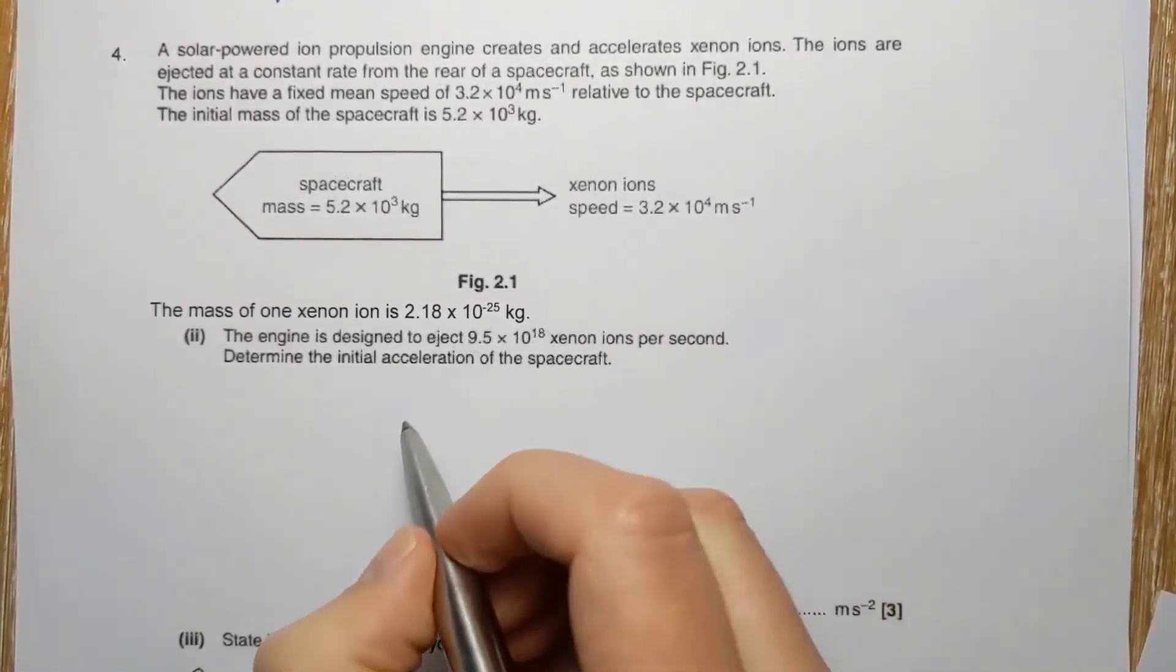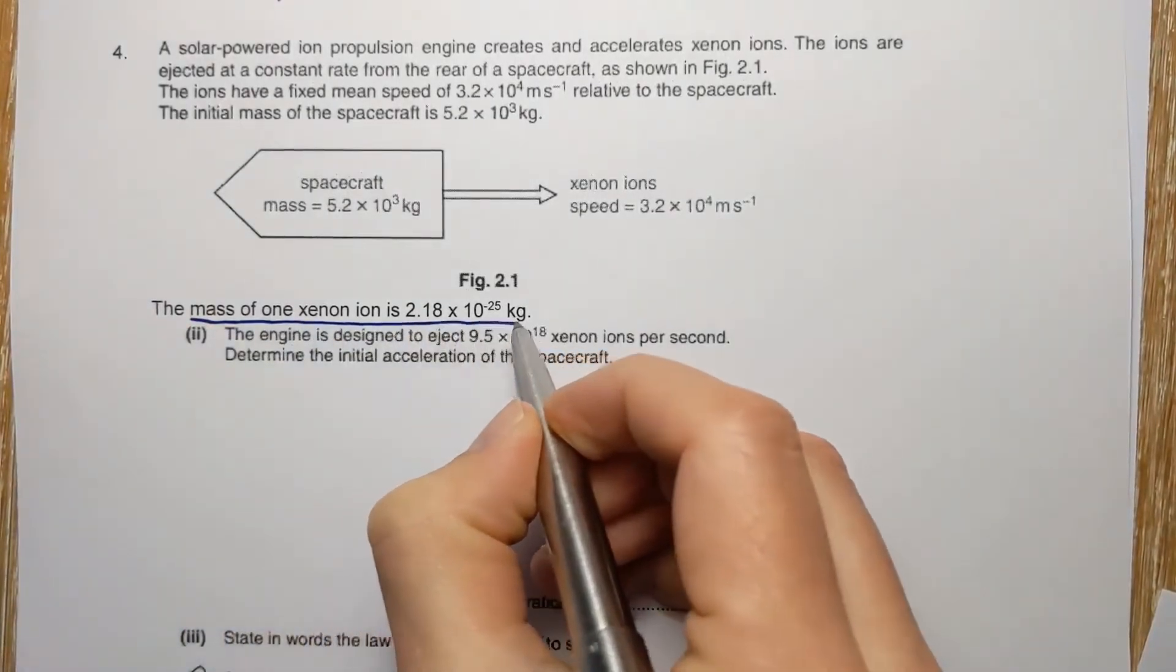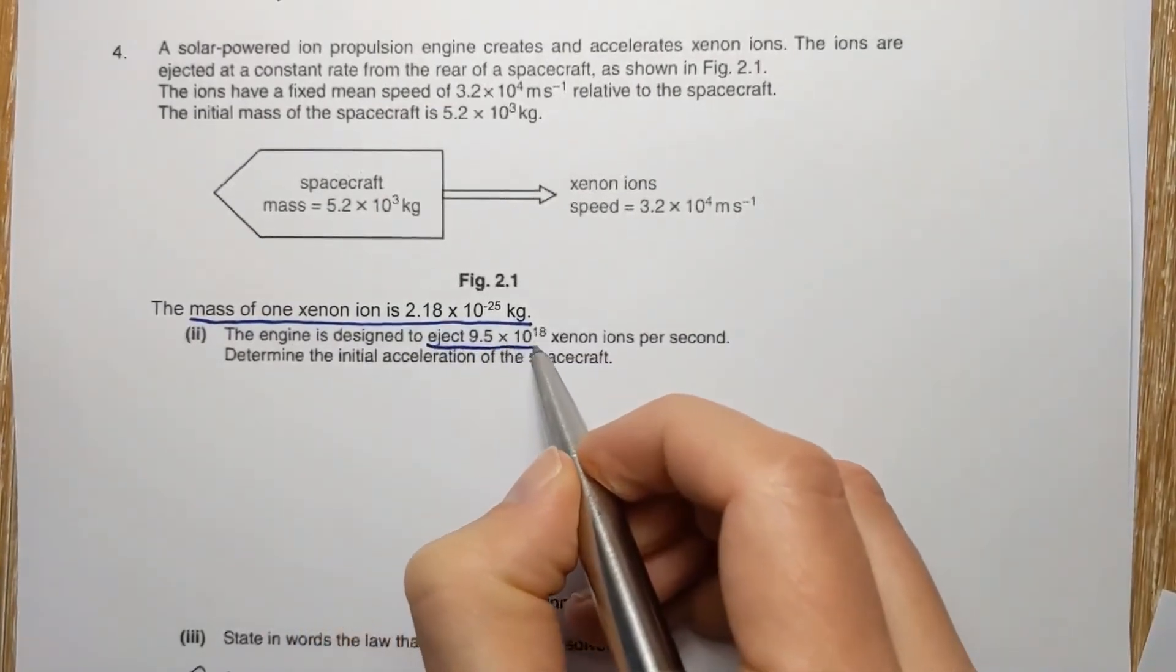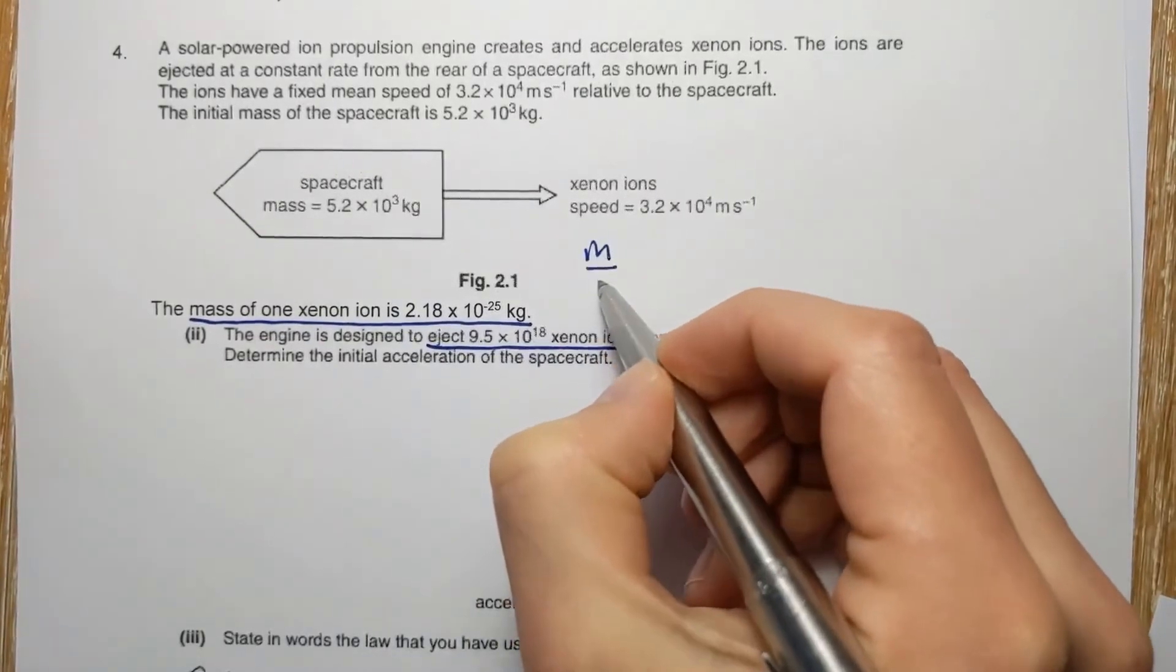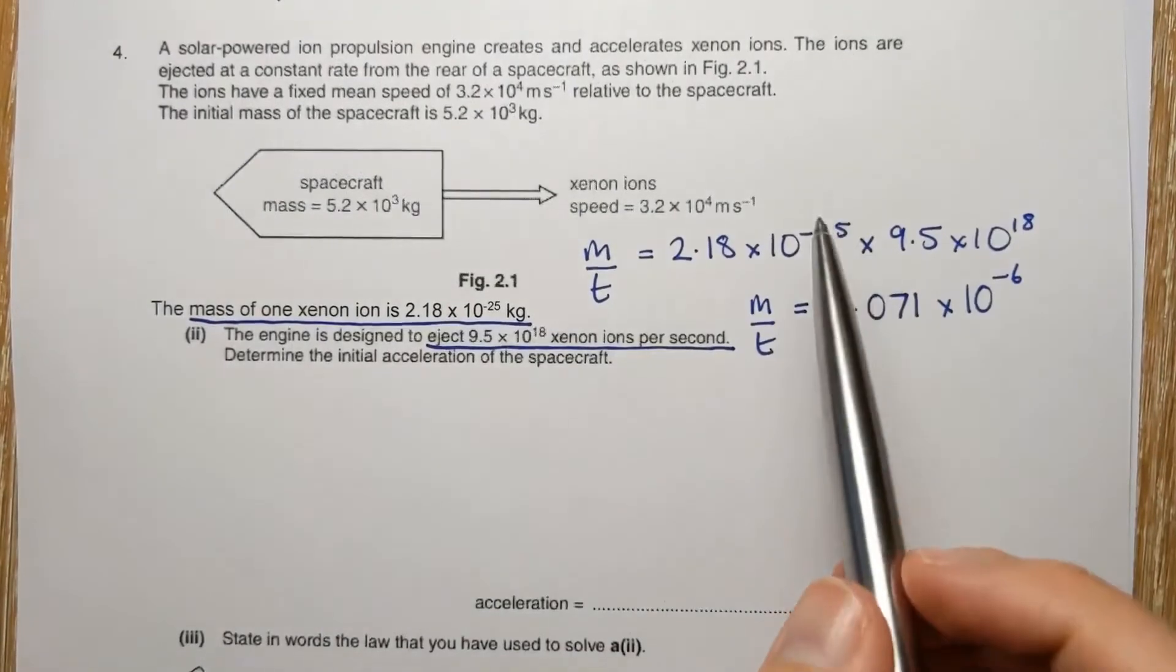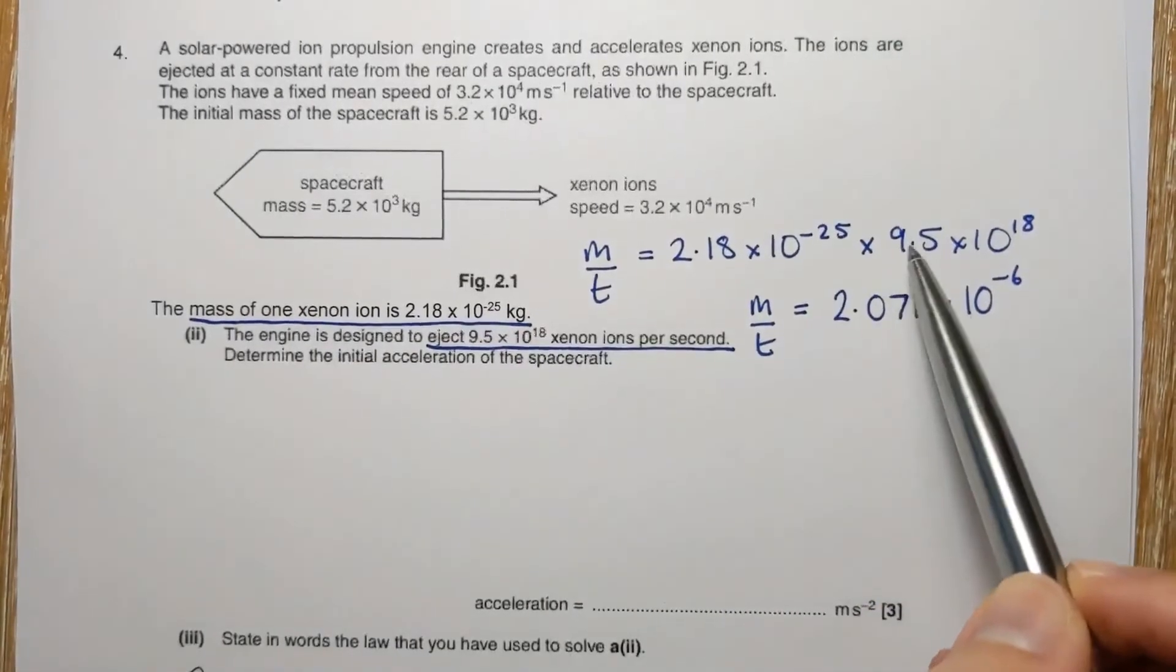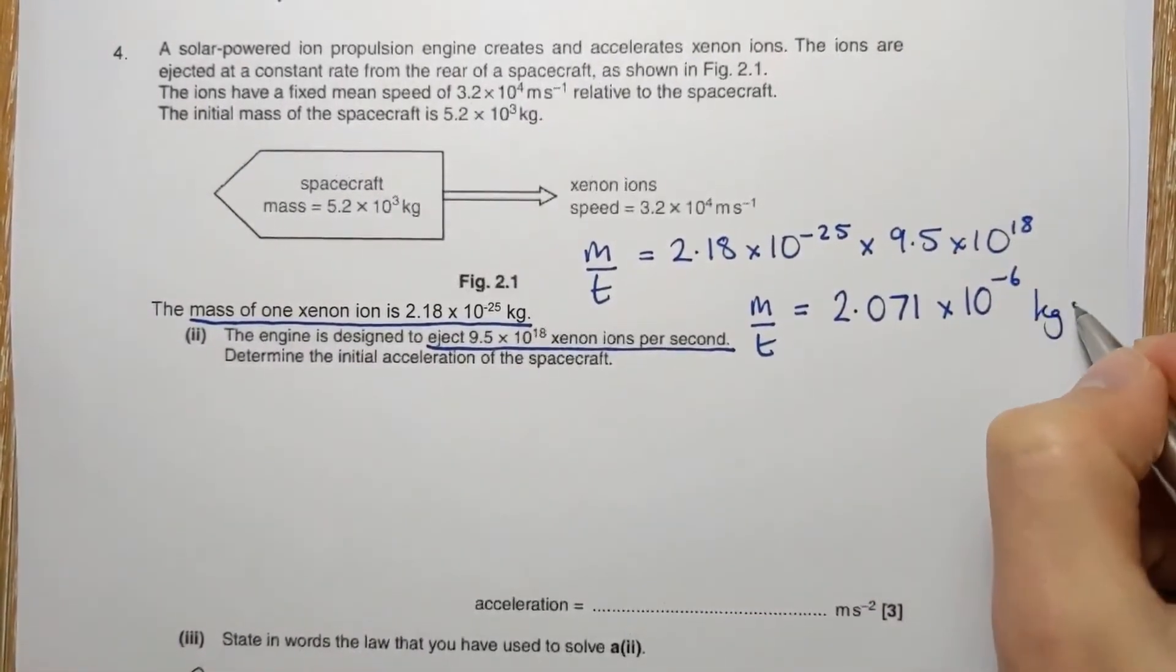Okay, here we go. So we're told that the mass of one ion is that, and the engine is ejecting this many ions per second. So that means that my mass per second is this. So we've got this many, sorry, it's this mass for one of them and that many per second. So it's this many kilograms per second.